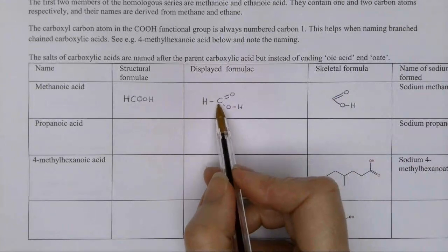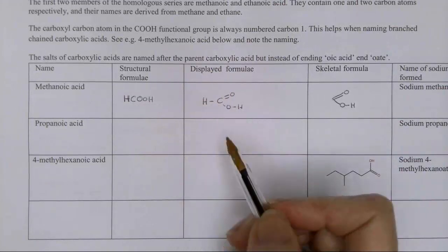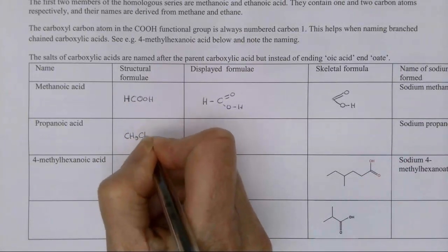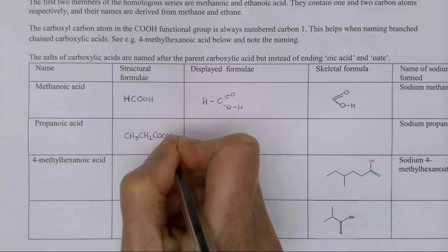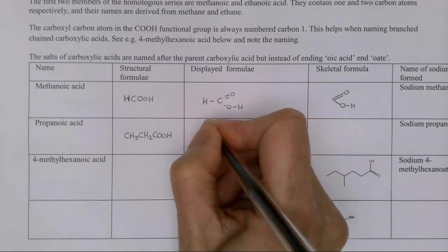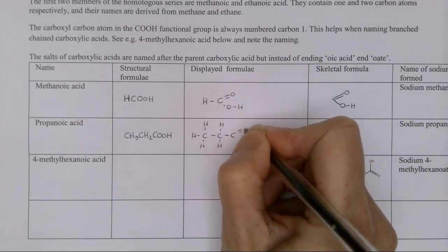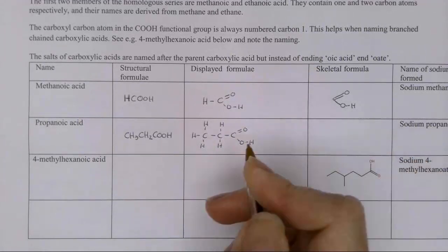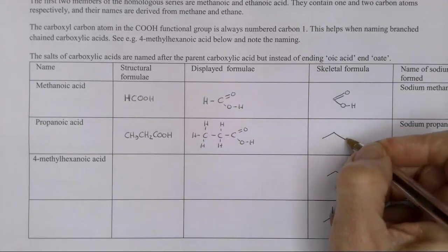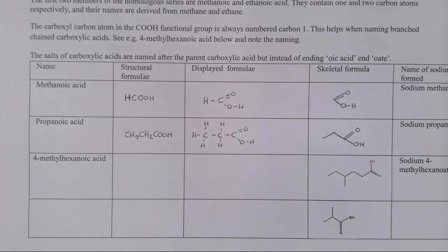Remember with skeletal, we don't show carbon atoms, we don't show carbon-hydrogen bonds or the hydrogen atoms, but we do show everything else. Propanoic acid: the structural formula would be CH₃CH₂COOH. Displayed formula: I've got my three carbons because it's 'prop', and again I've got my double bond oxygen and my OH. Skeletal: I've got one, two, three carbons, then my double bond oxygen and my OH group.